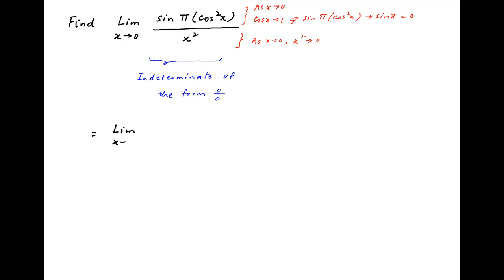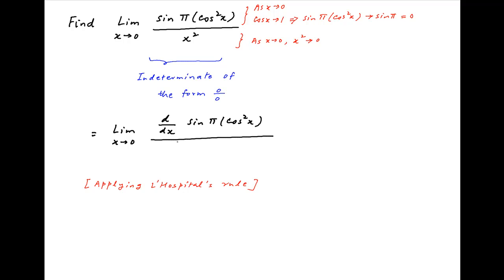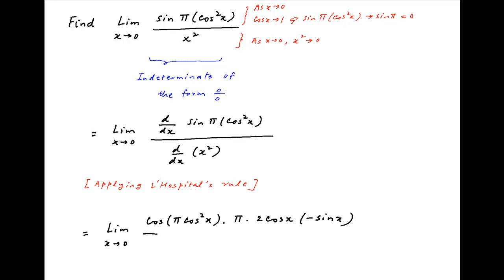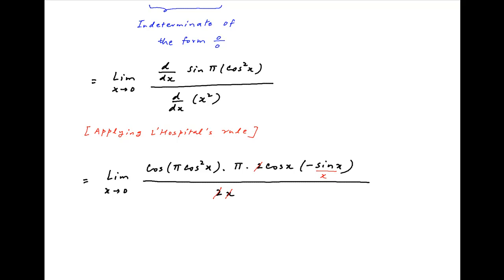Using L'Hôpital's rule, the value of the given limit is therefore equal to the limit as x tends to 0 of the derivative of the numerator, which is d/dx of sin of pi times cos squared x, divided by the derivative of the denominator, which is d/dx of x squared. This equals the limit as x tends to 0 of cos of pi times cos squared x, times the derivative of pi times cos squared x, which is pi times 2 cos x times minus sin x, divided by 2x. This can be written as minus pi times the limit as x tends to 0 of cos of pi times cos squared x times cos x times sin x upon x.